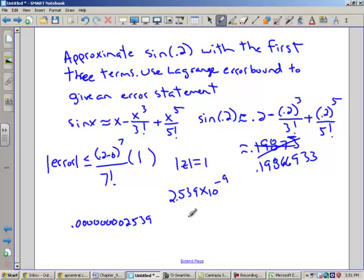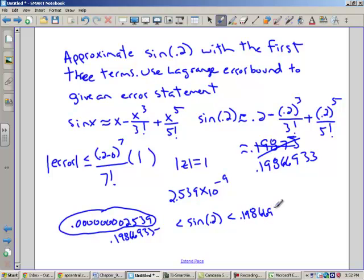So in other words, whenever I type in the sine of 0.2 into my calculator, I better get something that is really, really close to this. As a matter of fact, it can't be more than that away. So we have this boundary. We know that, and since this is absolute value, I guess I could have left it there. 0.19866933 minus this is my lower bound, and my upper bound will be 0.19866933 plus that upper bound. Now that's a pretty powerful error statement.